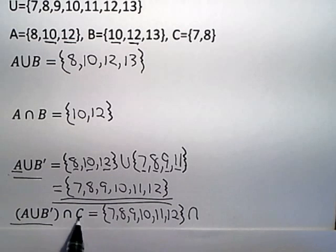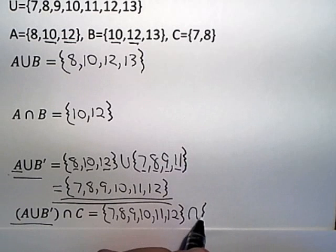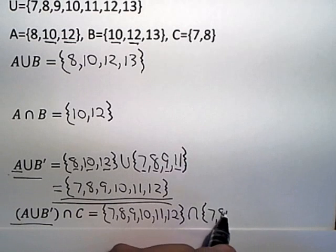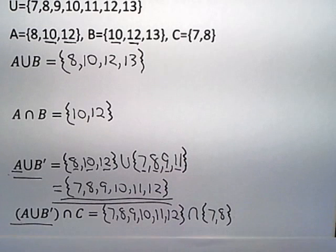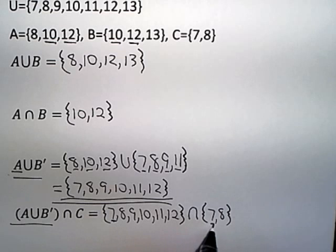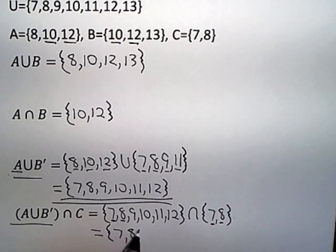And now I want to intersect that with the set C, which consists of the elements 7 and 8. And again, intersection means the elements have to appear in both and 7 and 8 appear in both. So the intersection of those two sets is the set consisting of 7 and 8.